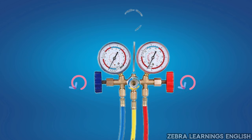By operating the on-off valves, we can control the refrigerant flowing in this gauge.